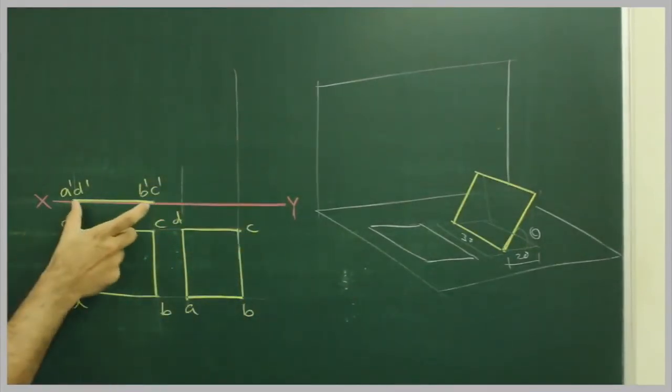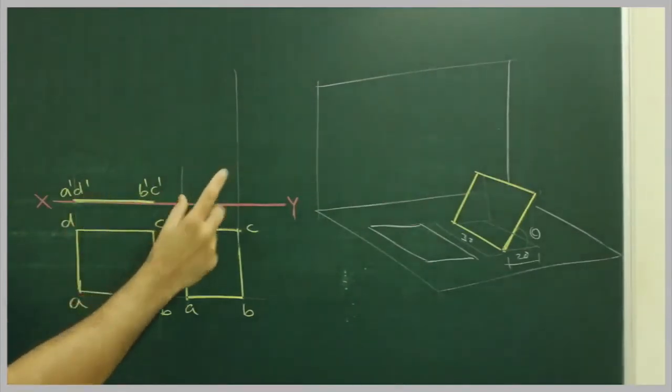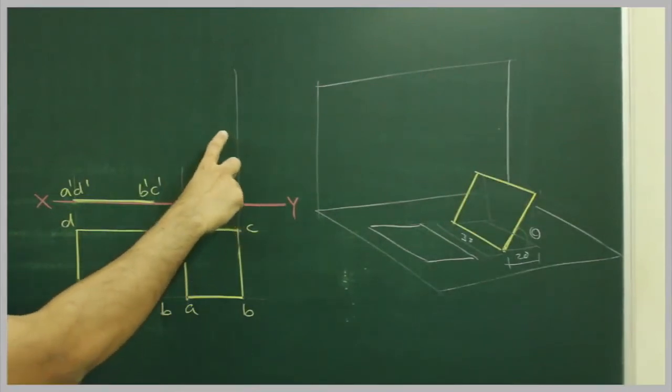Then we will take this distance, A dash D dash to B dash C dash. Take this length in your compass and from here, see this, from this point you cut off this side.